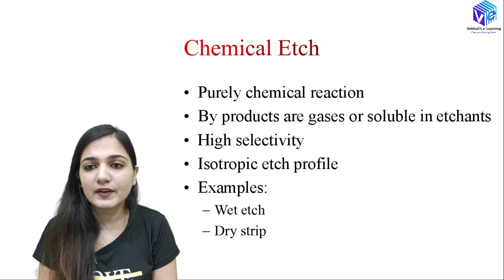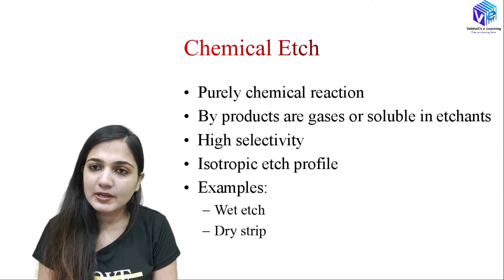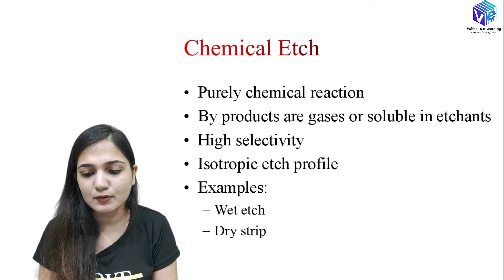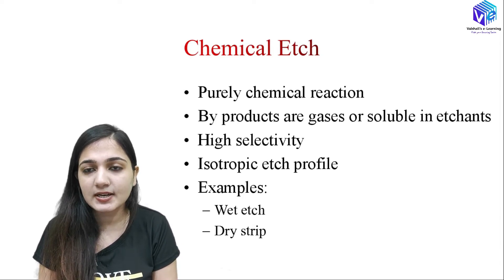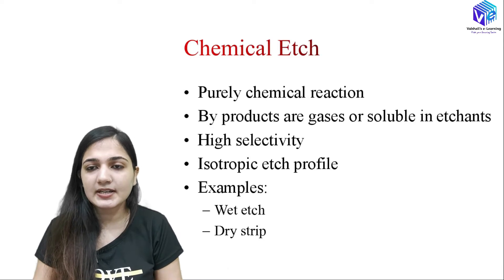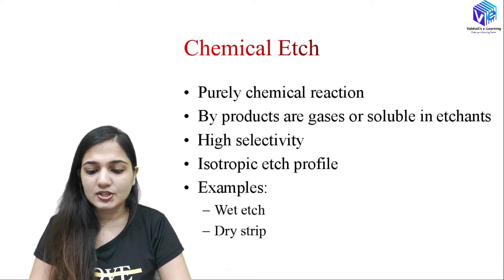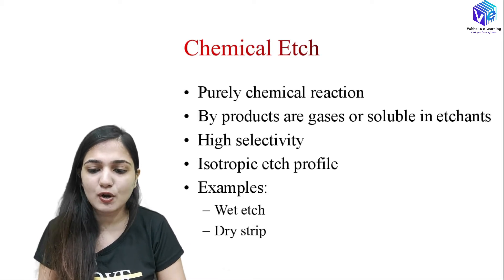Coming to a quick review on chemical etching: chemical etching is a purely chemical process where we use only chemical reactions. The byproducts are either gases or they are soluble in the etchants so they can be removed easily. It has high selectivity, and isotropic etch profiles are generated. High selectivity is an advantage; isotropic etch profile is a disadvantage. Examples include wet etching and dry strip.